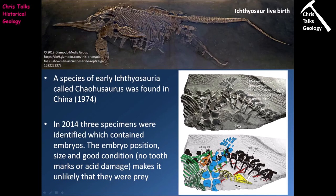The first embryo is marked out in yellow — we can see its skull and torso. The second embryo marked in orange is mostly a skull. The final embryo doesn't have a skull but we can see parts of the torso marked in red. The spinal columns show there was a third embryo in the womb, suggesting ichthyosaurs had the capacity to have more than one embryo in their uterus at any one time.